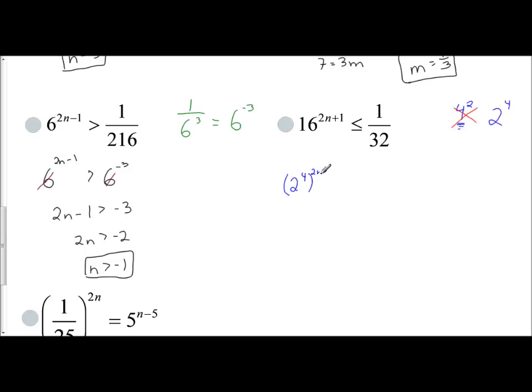I'll put it in parentheses and get 2n plus 1. What I'm going to check is, is 32 2 to some power? Well, double 16, you get 32. So 2^5. So really, this is 1 over 2^5, which means it's 2^(-5). You're going to have to distribute and apply your power rule. 4 times 2n is 8n. So you have 2^(8n+4) ≤ 2^(-5). I have the same base now. I can ignore it and deal with just the exponents. 8n + 4 ≤ -5. Subtract 4 and get 8n ≤ -9. Divide by 8, n ≤ -9/8.